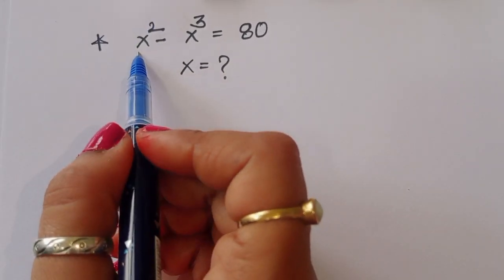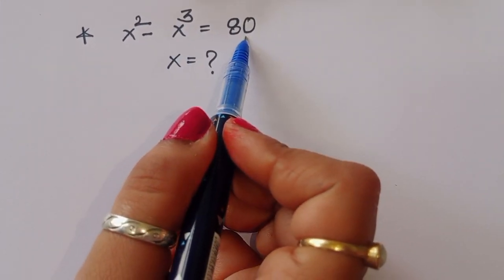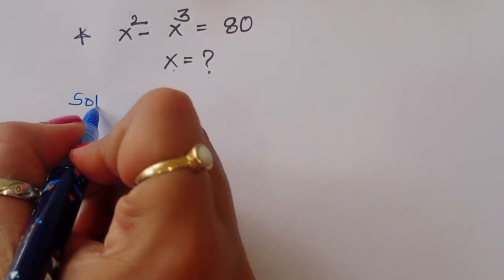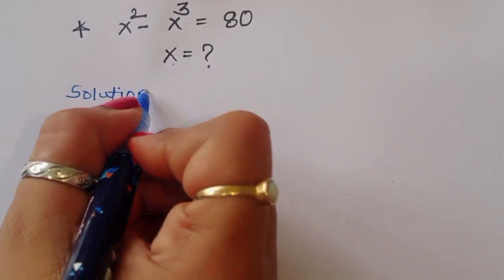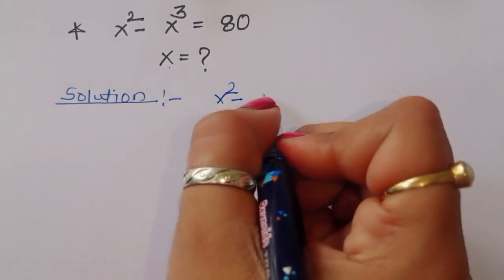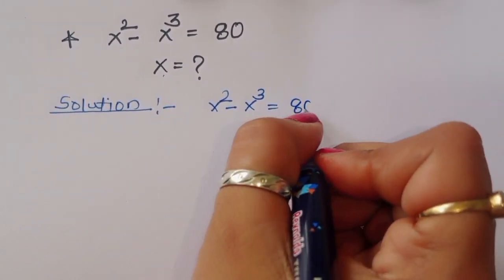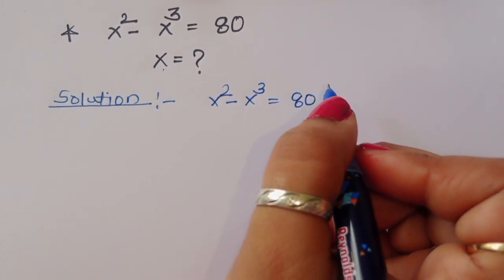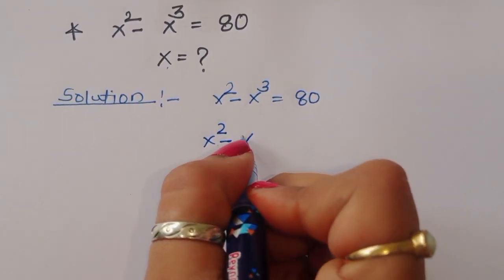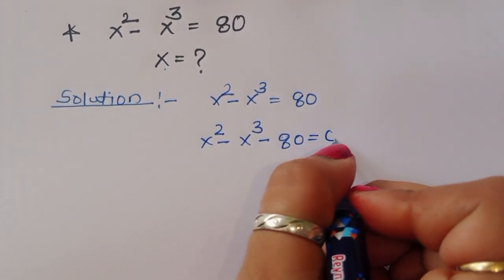The question is: given x squared minus x cubed is equal to 80, we have to find out the value of x. Let's see the solution. x squared minus x cubed is equal to 80. We can rewrite this as x squared minus x cubed minus 80 is equal to 0.